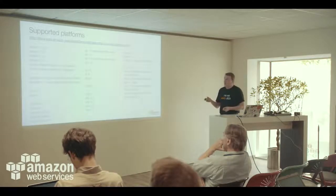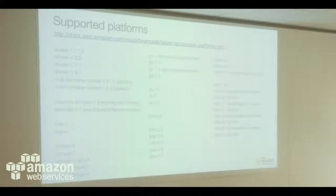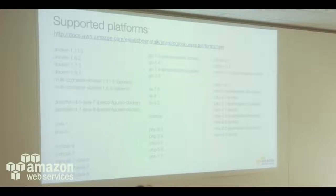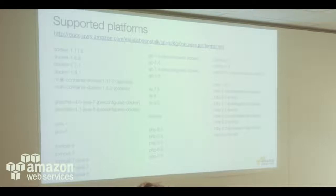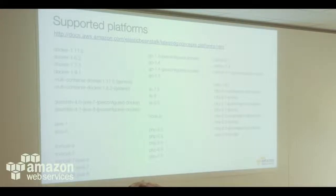Here's the full list of supported platforms, and it's constantly updated with the latest revisions. You can deploy Docker containers, Java, Tomcat, Golang, Python, Ruby, PHP, Node.js — all with different versions. When there's a new PHP version, like PHP 7, it's there. And whenever 7.1, 7.2, 7.3 show up, they'll be added. Lots of different platforms.